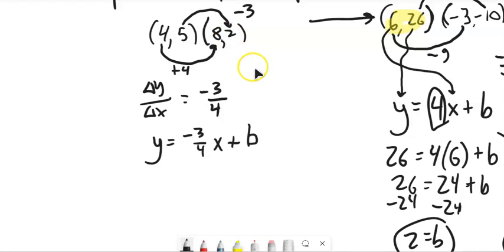You can plug in either point, the 4, 5, or the 8, 2. I'm just going to grab the first one. So y is equal to 5. So the 5 is going to take place of the y when x is equal to 4. So 4 is going to take place of the x plus b. And now I can solve this for b.